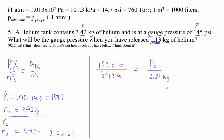So I'm going to go 159.7 divided by 3.42, and then I'm going to multiply by 2.29, and I get 106.93.